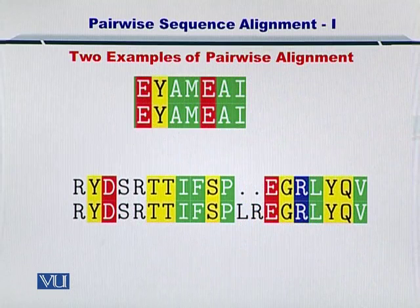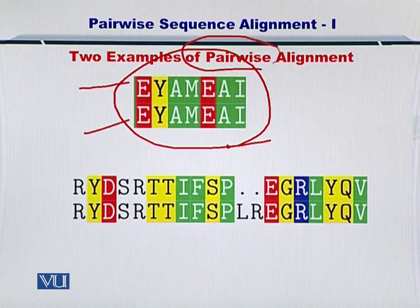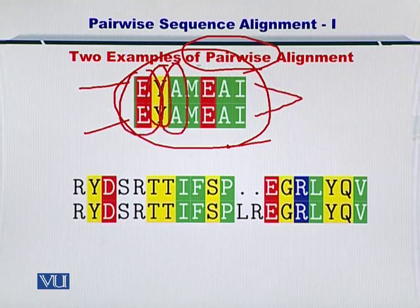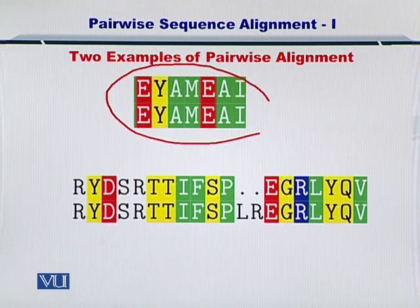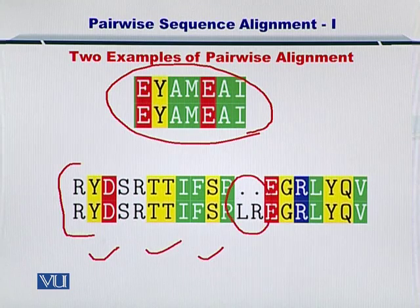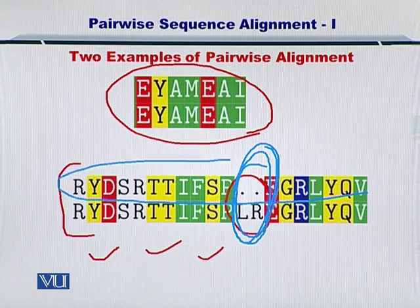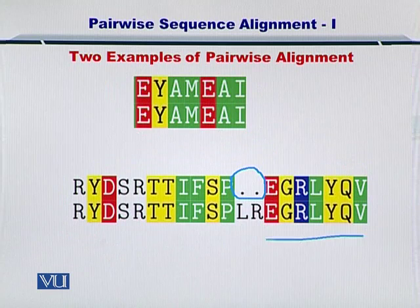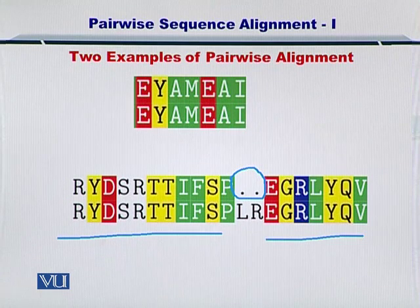Two examples are given here. In the first example, this is sequence one and this is sequence two — a pairwise alignment where all amino acids match each other very nicely, showing a lot of similarity. However, in the example below, everything is matching except one portion, because these two amino acids could not be found in the upper sequence, so they are represented with two dots. The rest of the sequence matches very nicely. These dots are called gaps, and we'll talk about them in detail later.